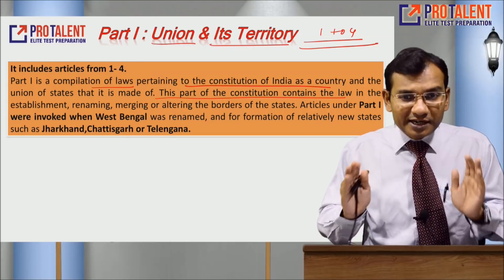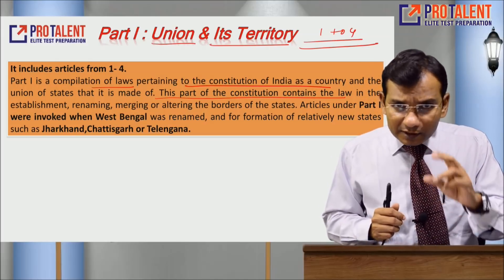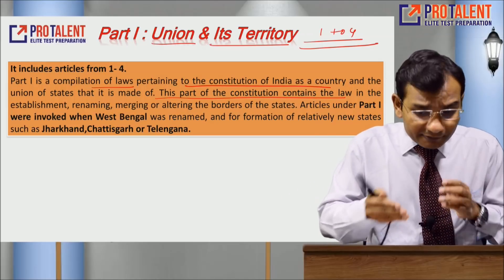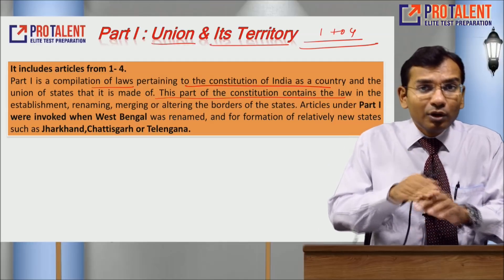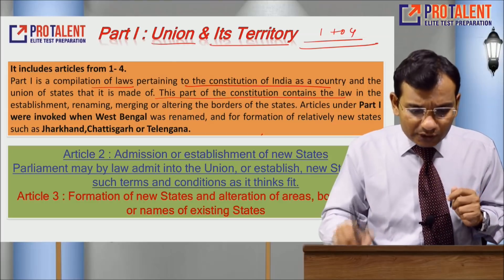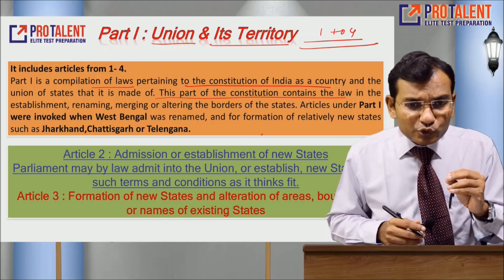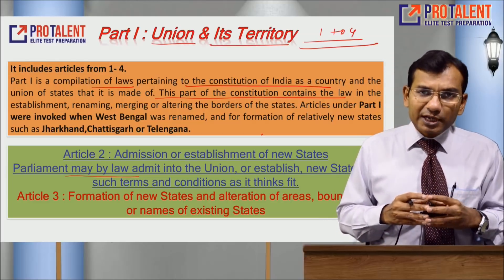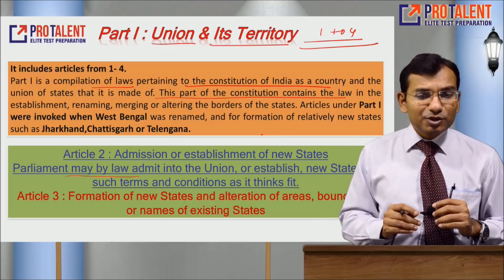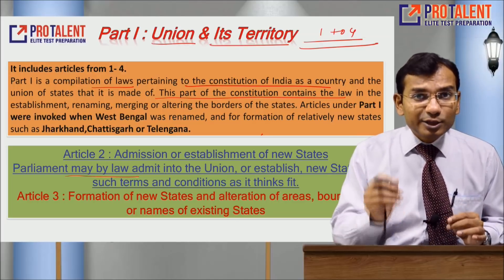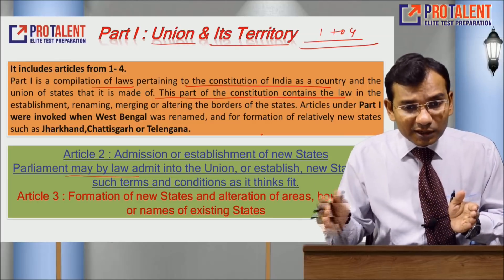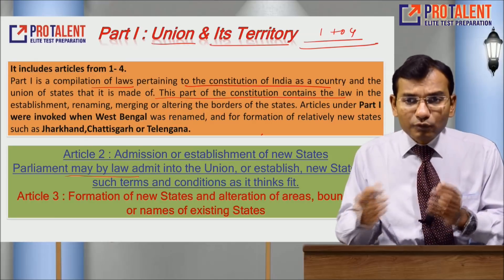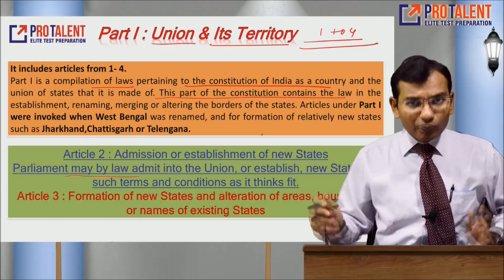Our country is named India or Bharat and is called the Union of India — we are one from day one. Article 2 says Parliament may by law admit into the Union of India or establish new states on such terms and conditions as it thinks fit. For example, Sikkim joined in 1975 through Article 2. Article 3 covers formation of new states or alteration of areas, boundaries, or names of existing states — for example, Telangana was formed from Andhra Pradesh under Article 3. So Articles 1 to 4 define who we are and what our boundaries are.